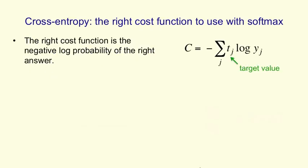Now the question is, if we're using a softmax group for the outputs, what's the right cost function? And the answer, as usual, is that the most appropriate cost function is the negative log probability of the correct answer.